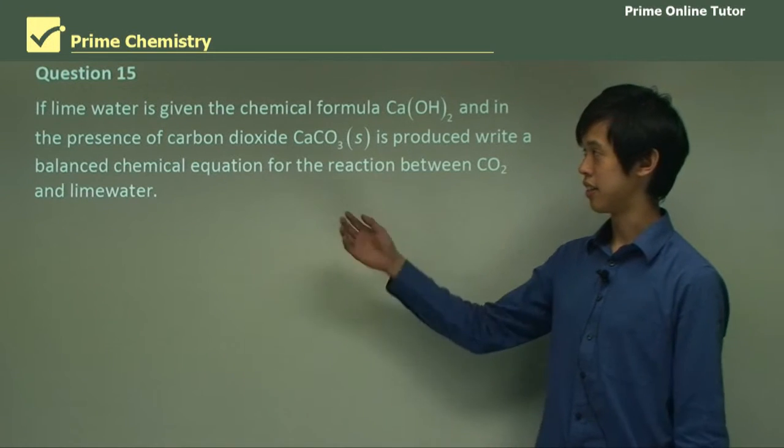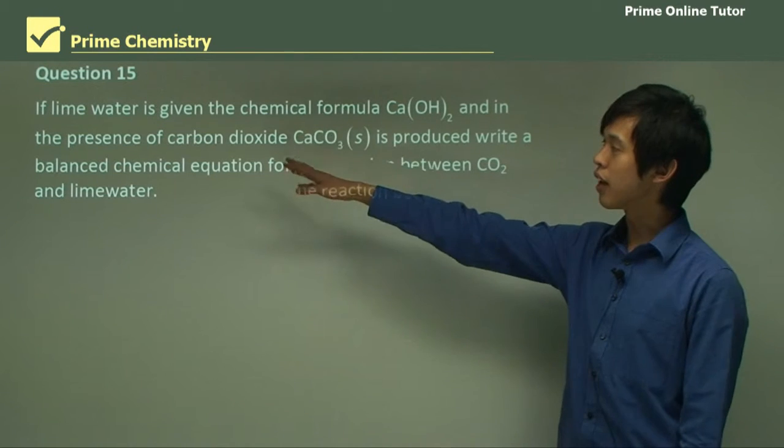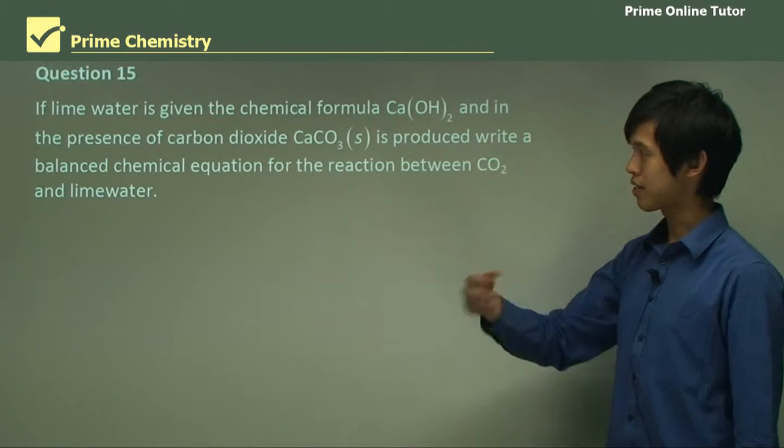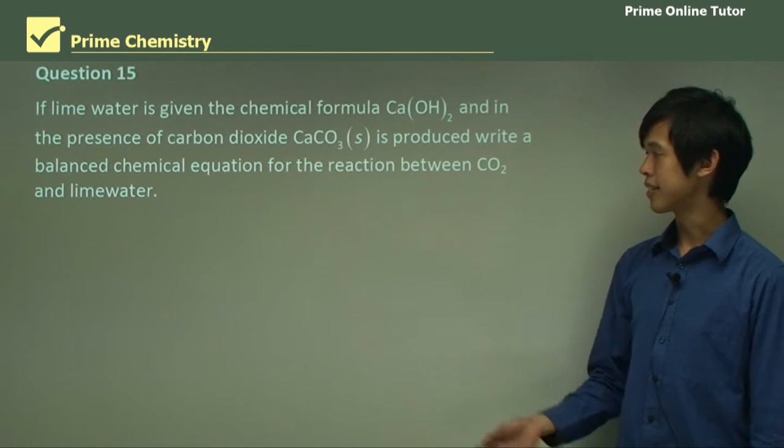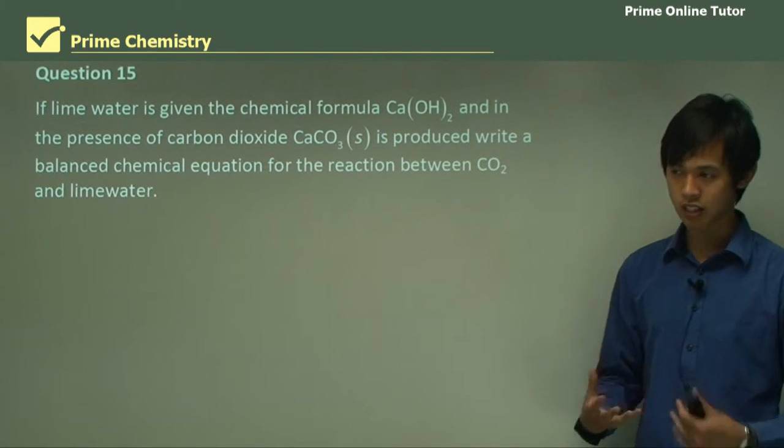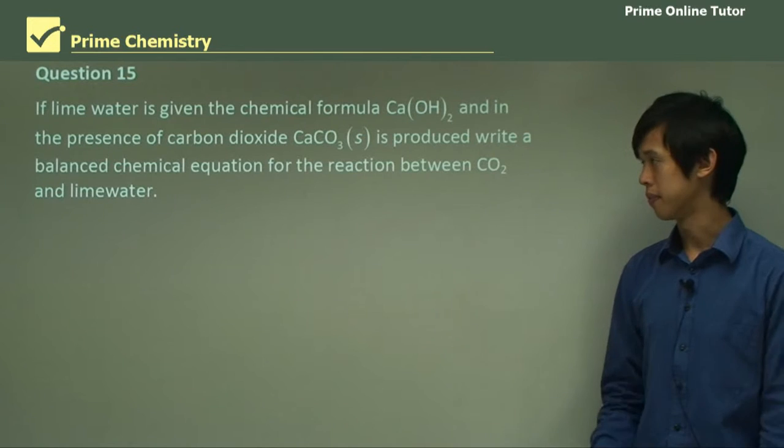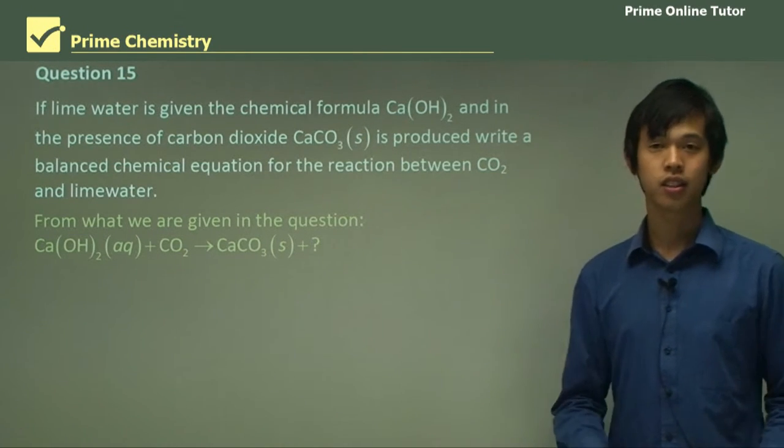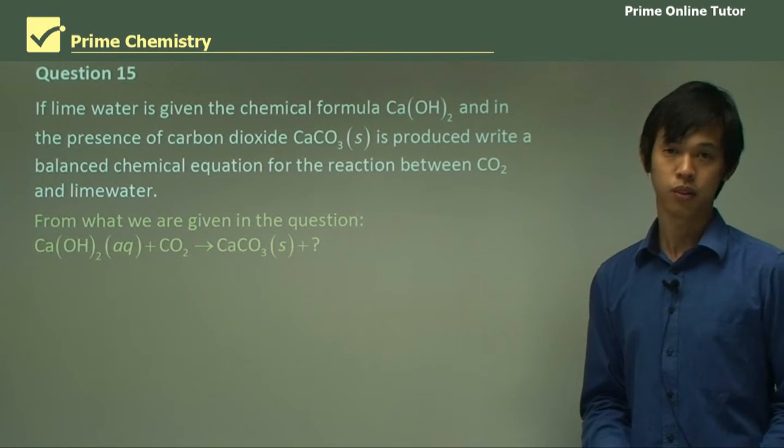So we're going to look at now the other tests for carbon dioxide, the lime water test. So in this question, if lime water is given the chemical formula Ca(OH)2, and in the presence of carbon dioxide CaCO3 is produced, calcium carbonate, write a balanced chemical equation for the reaction between CO2 and lime water. So we're actually going to look at what is the actual chemical reaction that's happening when carbon dioxide hits lime water. So from the question, again, as I always say, just write down the things that you do know. And if you don't know this equation, then we'll just derive it from sort of first principles. All you have to do is write down the things that you know first.